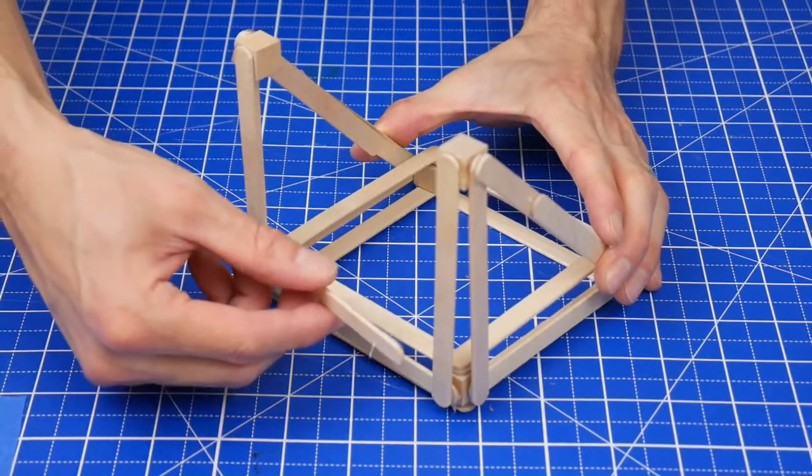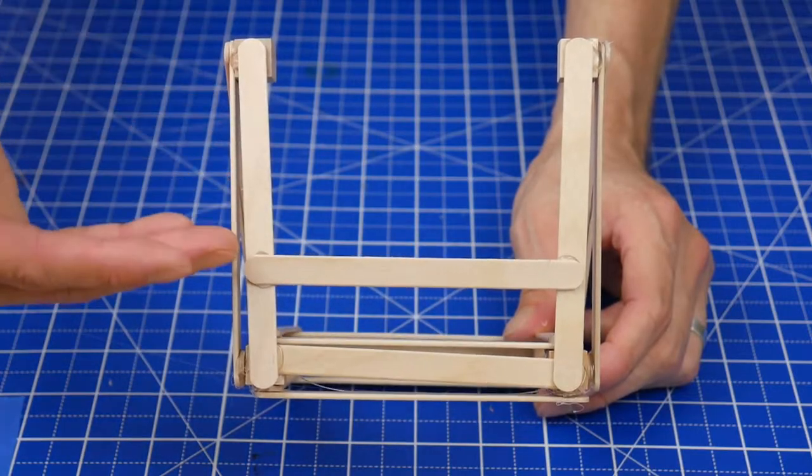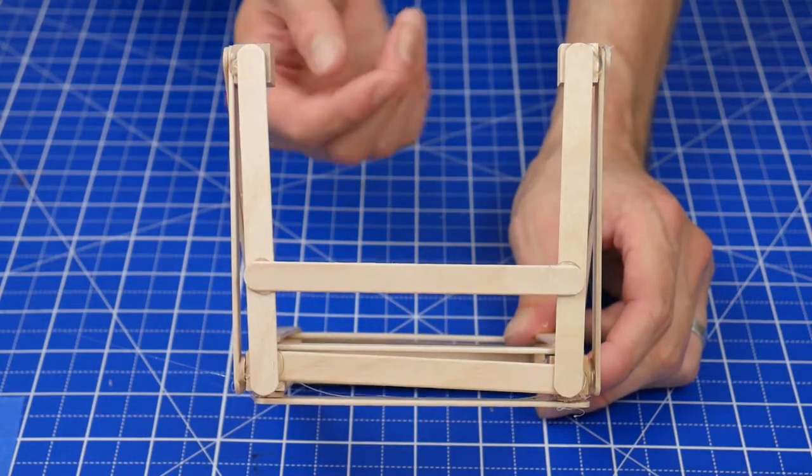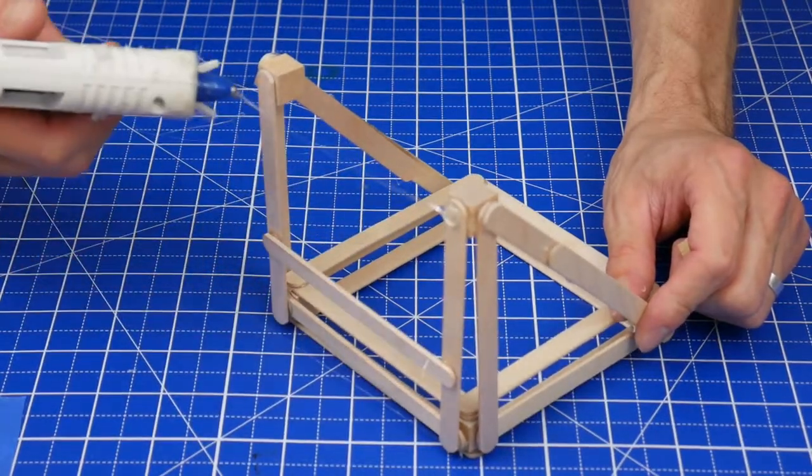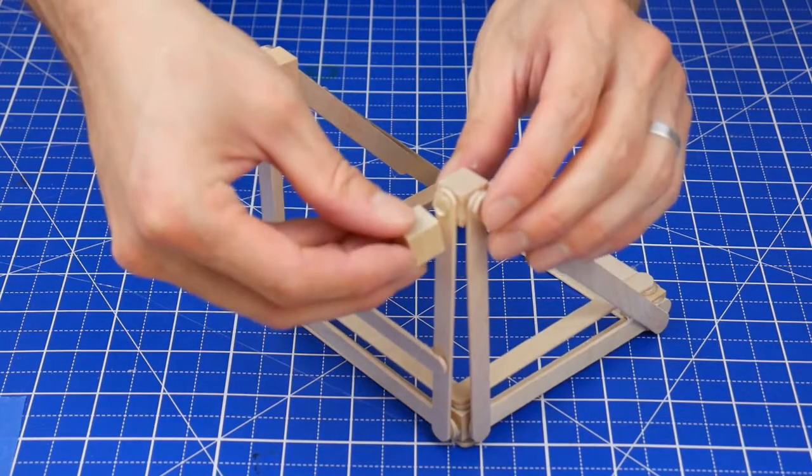Finish the structure by gluing one more stick that connects the vertical columns. Make sure that this stick is lower than the halfway point, otherwise it might collide with the sling. To prepare for the sling, glue two more cubes onto the front of the slingshot here and here.